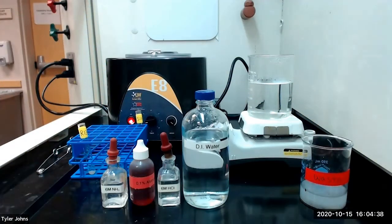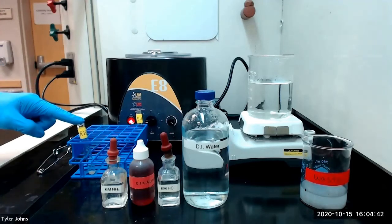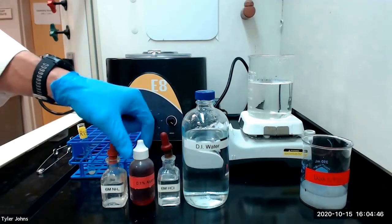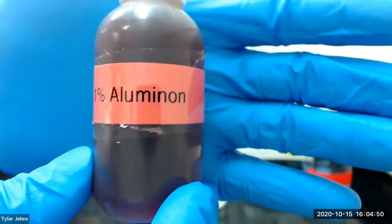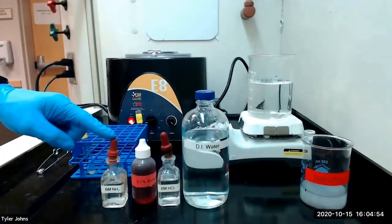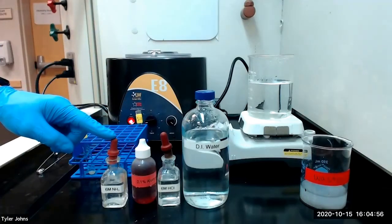We will now confirm the presence of aluminum ion. We will dissolve residue R13 in one milliliter of six molar hydrochloric acid. We will then add two drops of 0.1% aluminum reagent. We will then make the solution faintly basic with the dropwise addition of six molar ammonia.